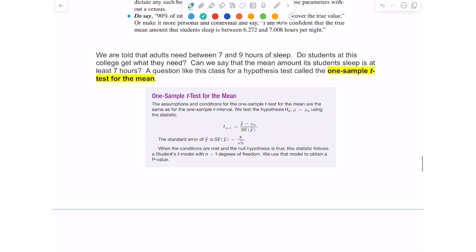Like any hypothesis test, we're always going to look for the hypotheses. We're going to check our conditions. We're going to do our calculations, which includes creating a sketch. We're going to make a decision about our p-value, whether we're going to reject or not reject the null, and then interpret what that means.